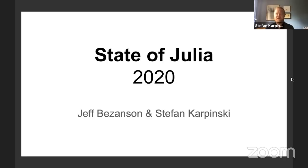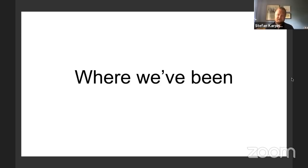We figured it's been a couple of years since 1.0, which had a very big state of Julia where we announced and released Julia 1.0. So we're just going to look back at some of the things that have happened since 1.0, what the big developments in the ecosystem and the language have been, and also look forward to what we have coming down the pipeline. Let's start with the past, present, then future.